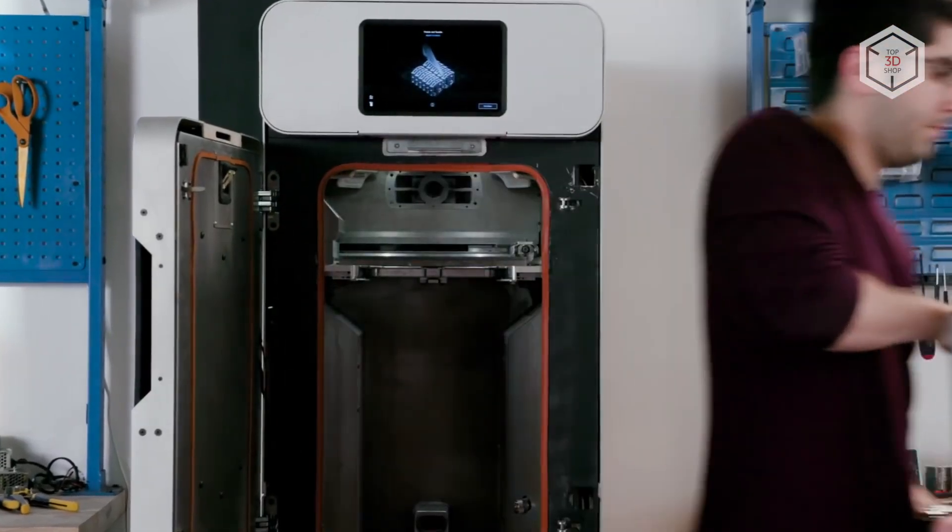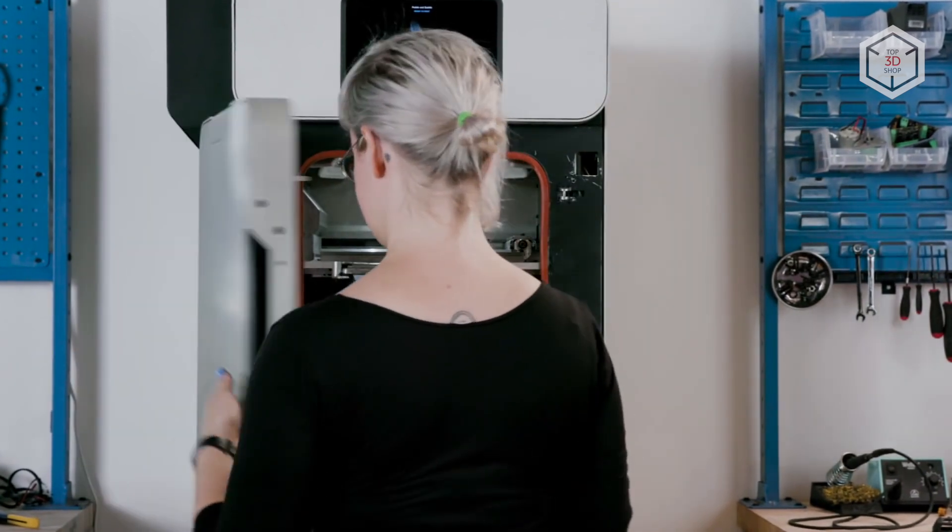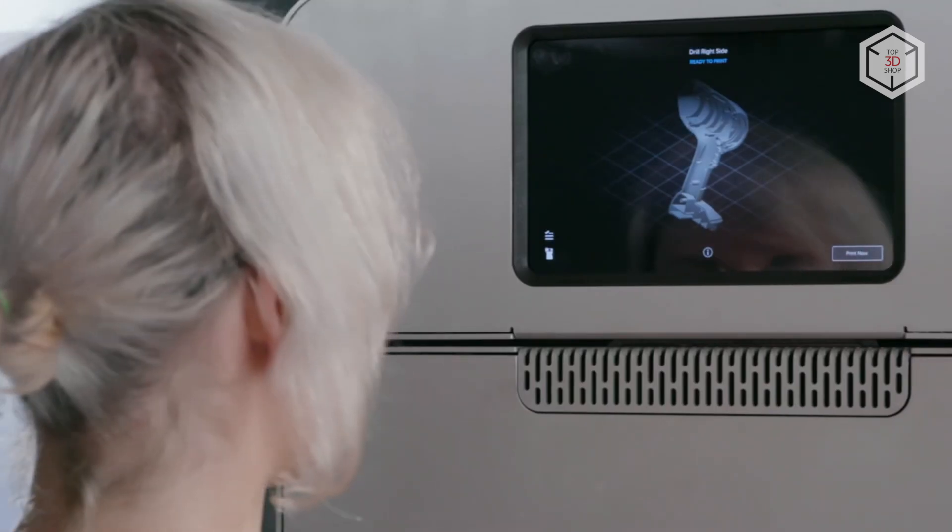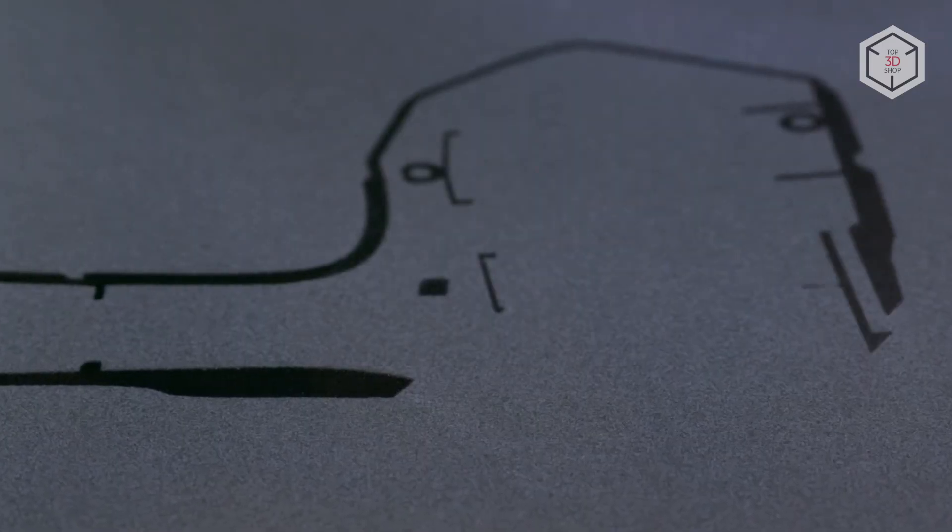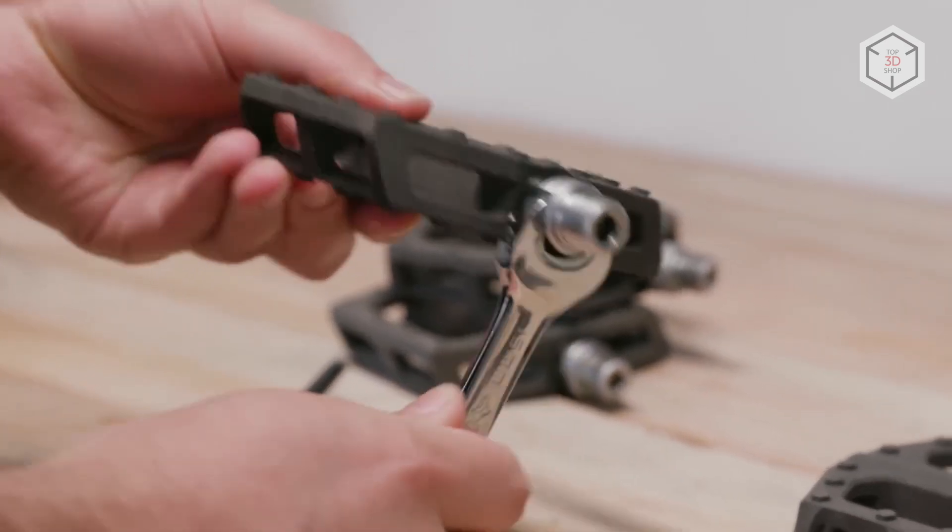Let's discuss the two types more specifically, and compare the most noteworthy models in each class. Desktop SLS 3D printers are significantly smaller in size, a lot more affordable and user-friendly, and have smaller build volumes compared to their industrial analogs. In most cases, the operation of such machines doesn't require special skills, as the process is mainly automated.